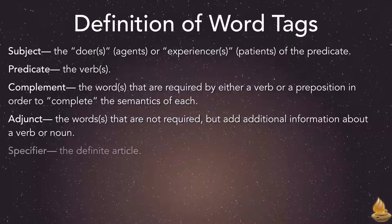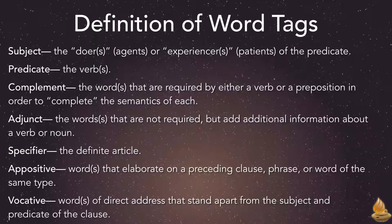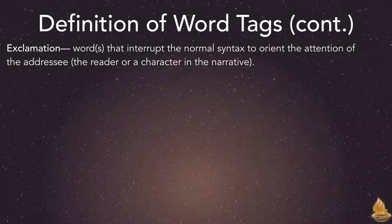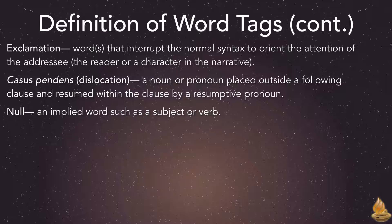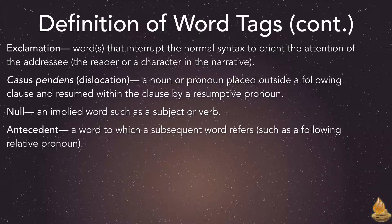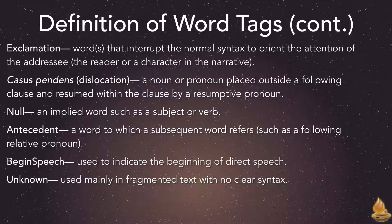Word tags also include the specifier, which is the definite article; appositives, which are words that elaborate on a preceding clause, phrase, or word of the same type; and vocatives, words of direct address that stand apart from the subject and predicate of the clause. The exclamation is a word that interrupts the normal syntax to orient the addressee, whether the reader or a character in the narrative. The casus pendens is a dislocation — a noun or pronoun placed outside a following clause and resumed within the clause by a resumptive pronoun. The null is an implied word such as a subject or verb. The antecedent is a word to which a subsequent word refers, such as a relative pronoun. That leaves begin speech, which indicates the beginning of direct speech, and unknown, used mainly in fragmented text with no clear syntax.